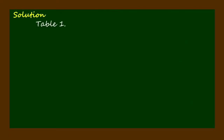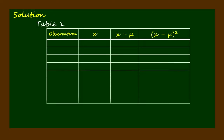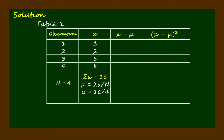For the solution, let's construct Table 1. Here we are going to solve for the population mean, population variance, and the population standard deviation using the values 1, 2, 5, and 8, with the population size equal to 4. Let's solve for the population mean by taking the summation of x divided by the population size.